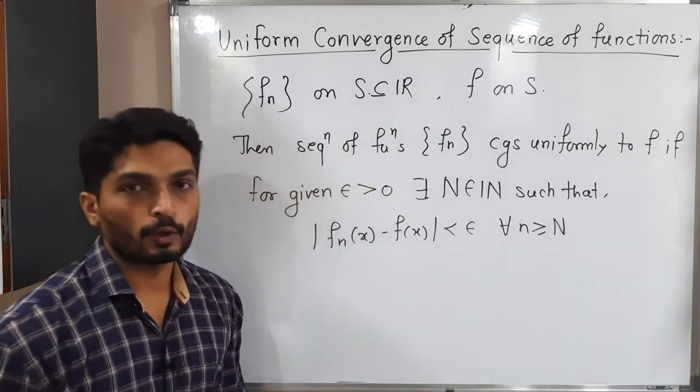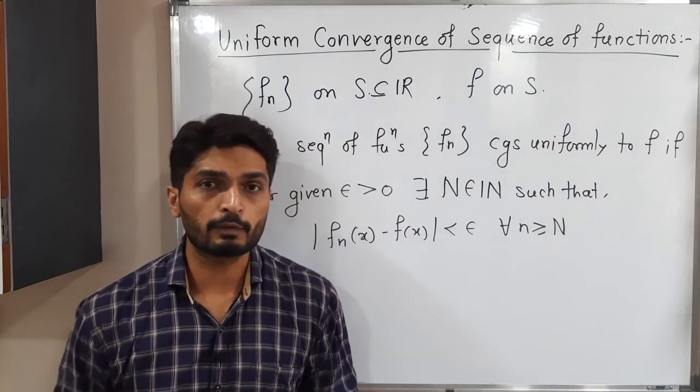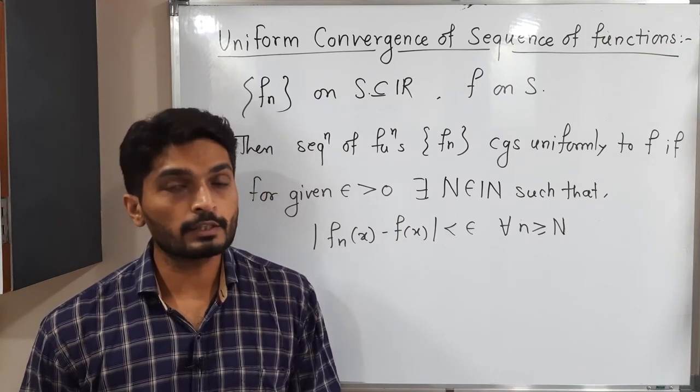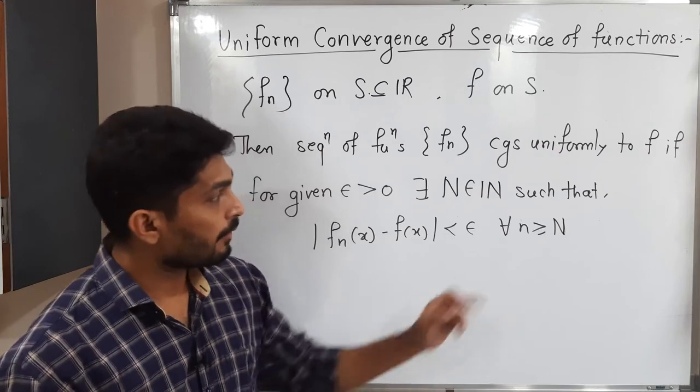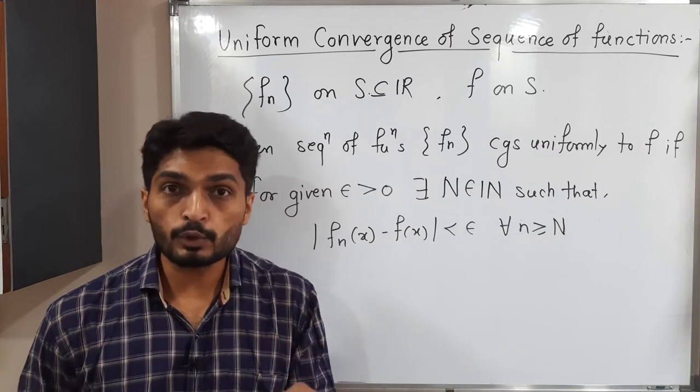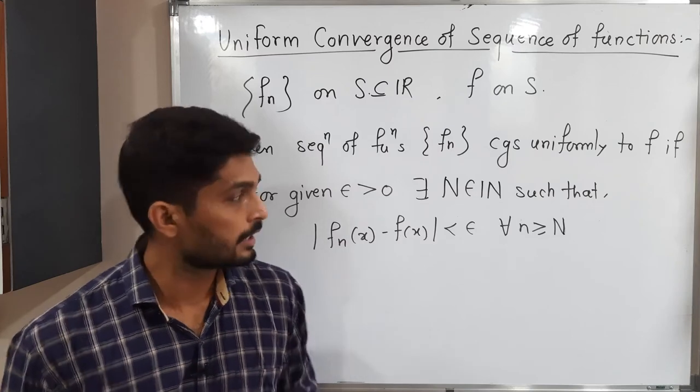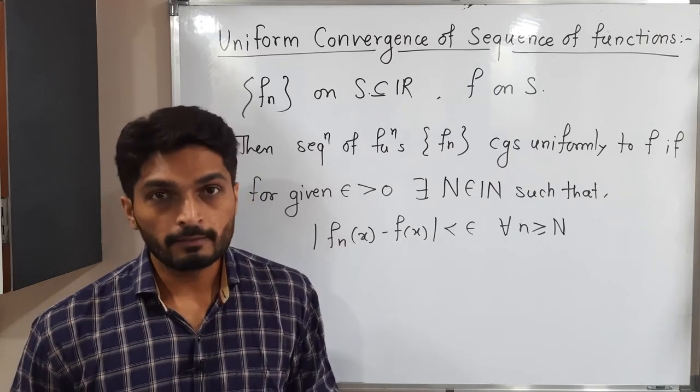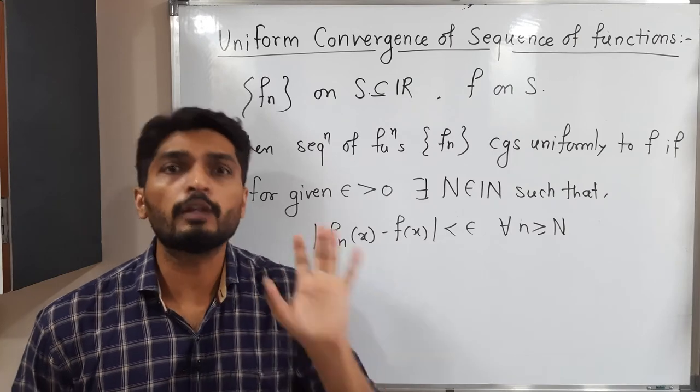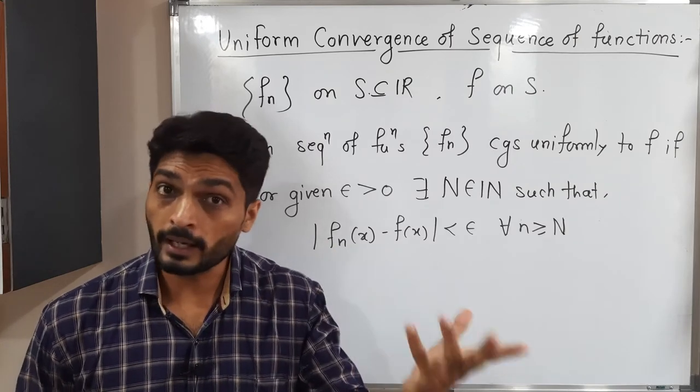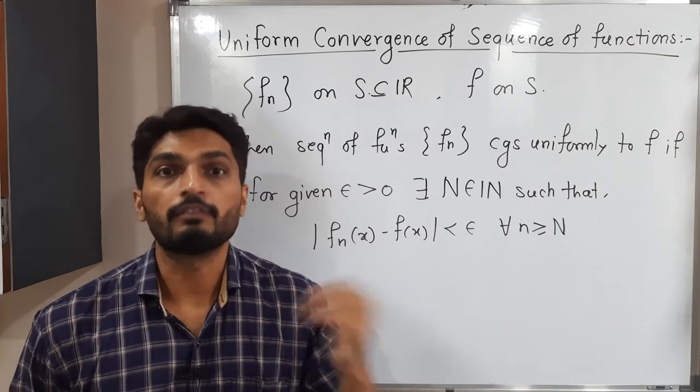So this is the definition of uniform convergence. Can you tell me what is the difference between point-wise convergence and uniform convergence? Yes, in case of point-wise convergence our N depends on epsilon as well as point x, but here in uniform convergence our N depends on epsilon only. That means it is true for any value of x, but in case of point-wise convergence if your x varies your N will be different.